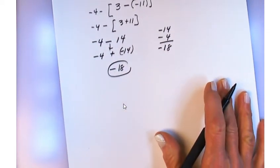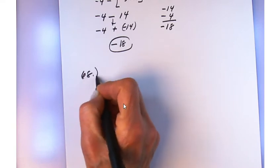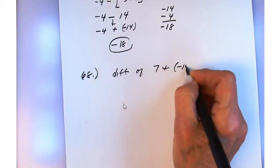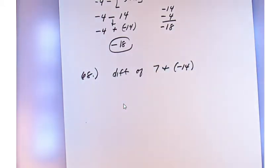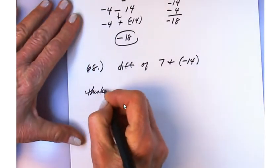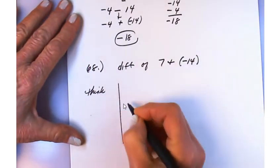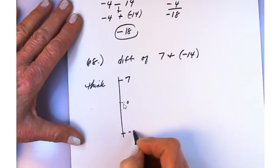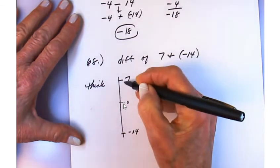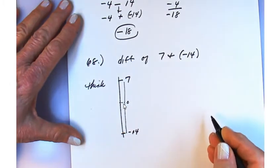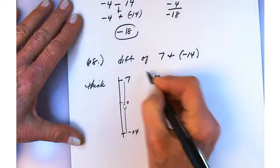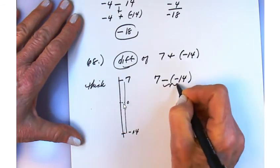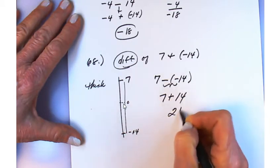Number 68: the difference of 7 and negative 14. Think of a thermometer: 0 in the middle, 7 above, negative 14 below. 'Difference' tells you to subtract: 7 minus negative 14. Two consecutive negatives become positive: 7 plus 14 equals 21. No units are given, but the difference is 21.